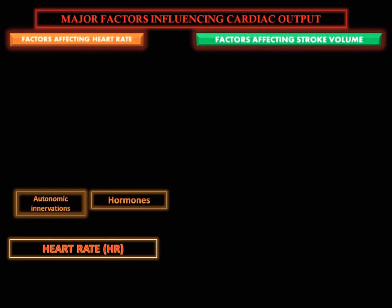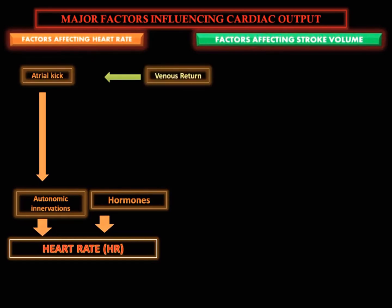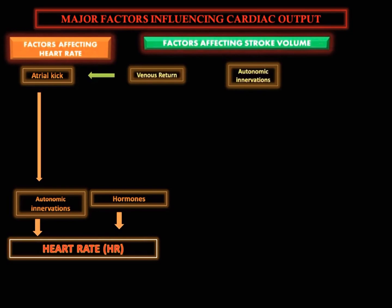Heart rate is largely determined and regulated by autonomic stimulation and hormones. Several feedback loops contribute to maintaining homeostasis dependent upon activity levels, such as the atrial reflex, which is determined by venous return.